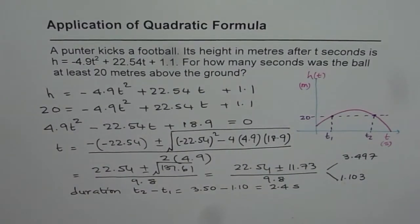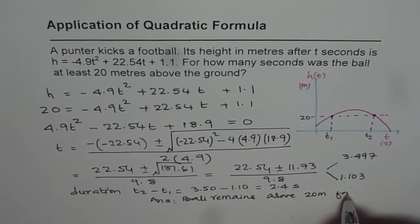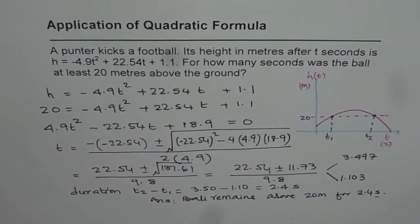So that is the time duration during which the ball remains above 20 meters of the ground. So we can write down clearly our answer that ball remains above 20 meters for 2.4 seconds. So that is how these questions can be answered. I hope you appreciate it. It is a direct application of quadratic formula. So just use quadratic formula with your calculator. You should be good to get the answer. Thank you.